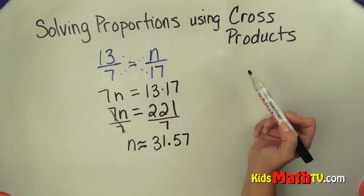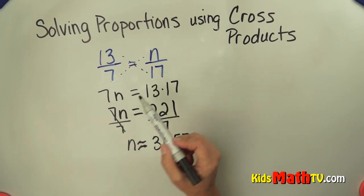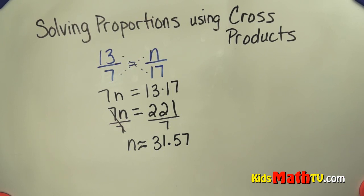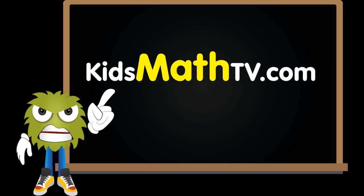So to solve proportions using cross products, you simply set the cross products equal and then isolate your variable and solve for the variable. That's the end of our lesson on solving proportions with cross products.